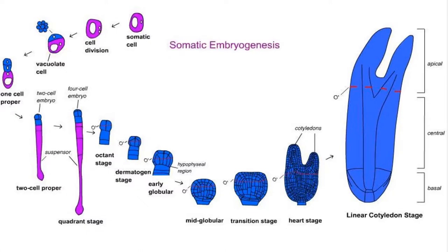Initiation and development of embryos from somatic tissue in plant culture was first recognized by Steward et al. in 1958, and Rahinit in 1958–59, in cultures of Daucus carota. In addition to somatic embryos from sporophytic cells, embryos have been obtained from generative cells, as in the classic work done by Guha and Maheshwari in 1964.